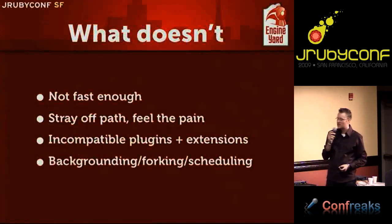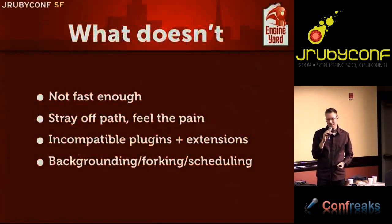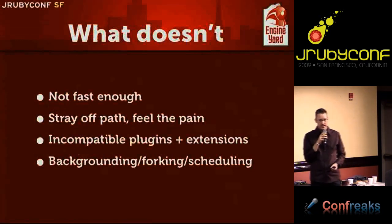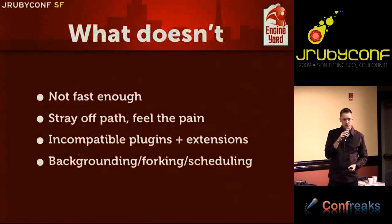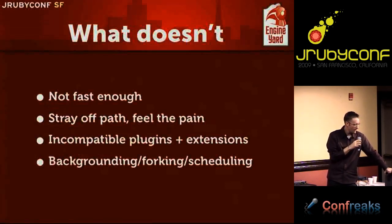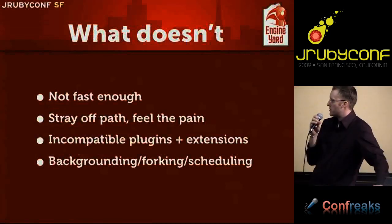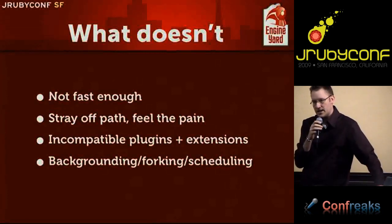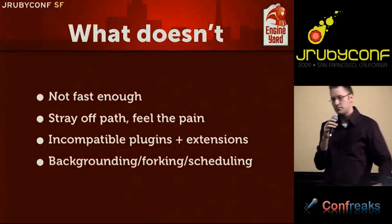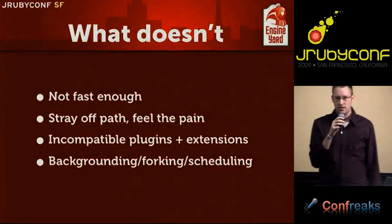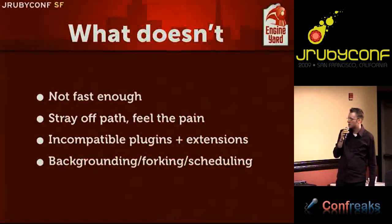What doesn't work? Well, it's not fast enough — though that's not to say it's not tolerable. We take performance seriously and we'd like to find new optimizations and new ways of running Rails apps to make things really zippy. The happy path development works great with JRuby, but once you stray off the path and do normal development tasks — like use image processing libraries, JSON libraries, or typical plugins — you start to feel some pain because there's a bit of mismatch.